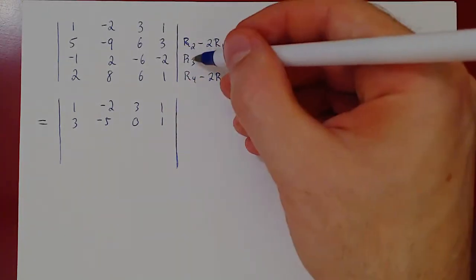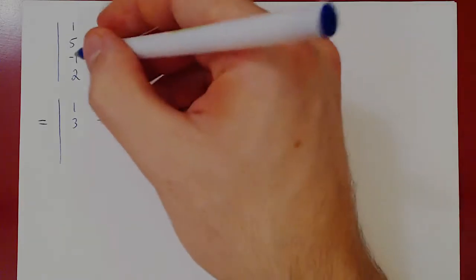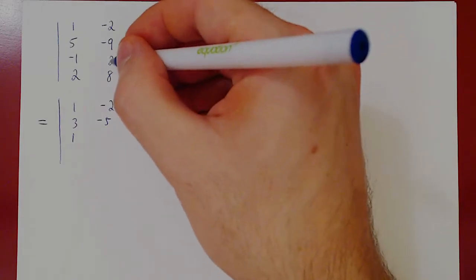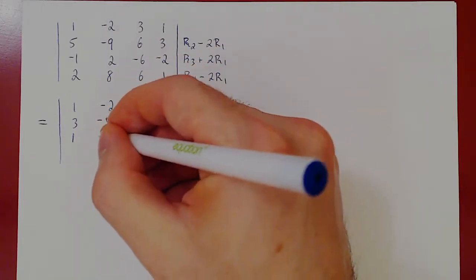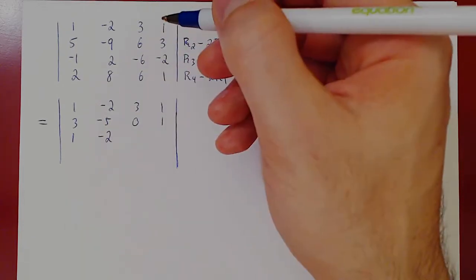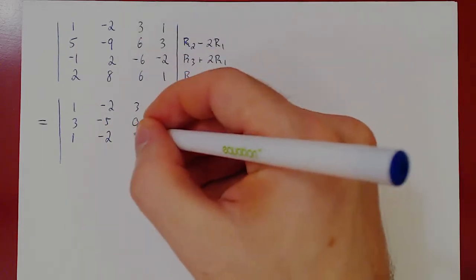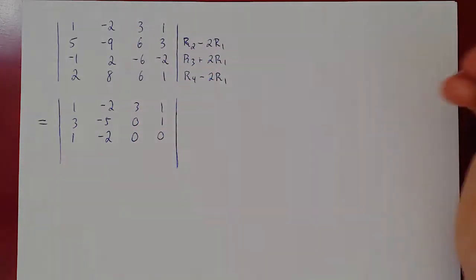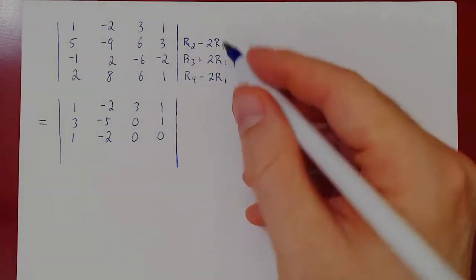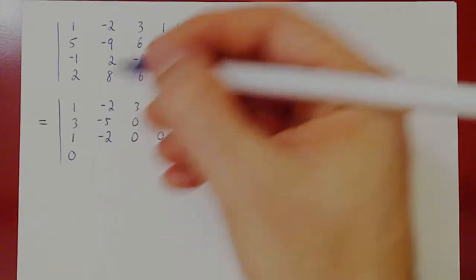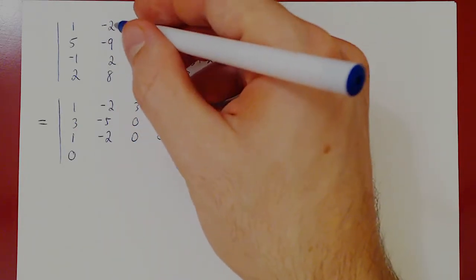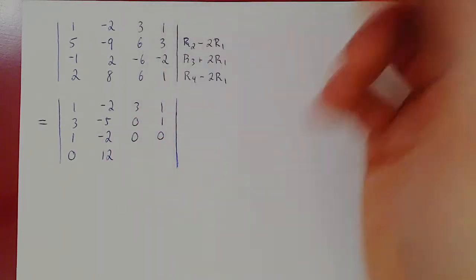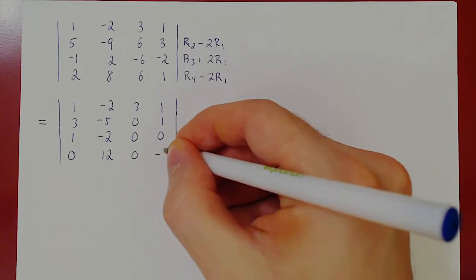Row 3 plus 2 row 1: negative 1 plus 2 is positive 1. 2 plus 2 times negative 2 is 2 minus 4, which is negative 2. Negative 6 plus 2 times 3 is negative 6 plus 6, which is 0. Negative 2 plus 2 times 1 is also 0. Row 4 minus 2 row 1: 2 minus 2 is 0. 8 minus 2 times negative 2 is 8 plus 4, which gives us 12. 6 minus 6 is 0. 1 minus 2 is negative 1.